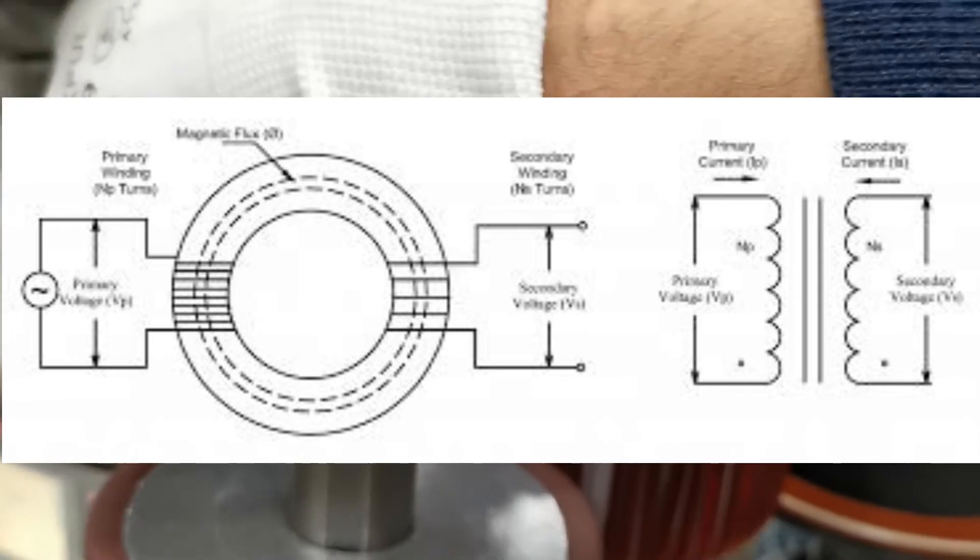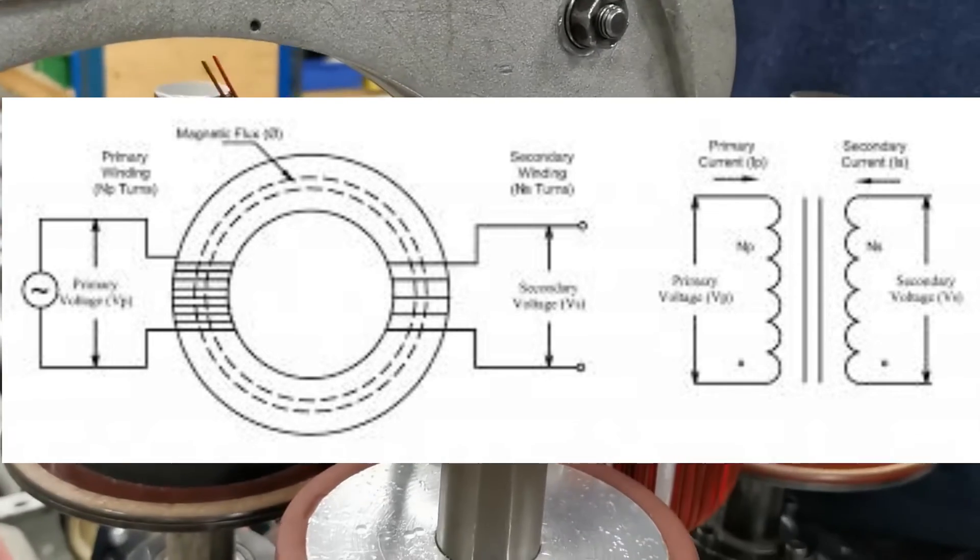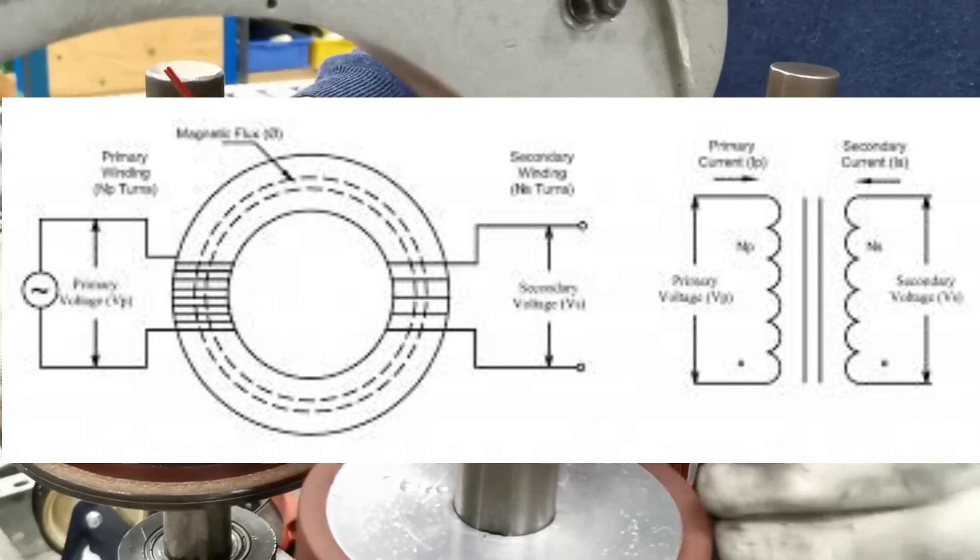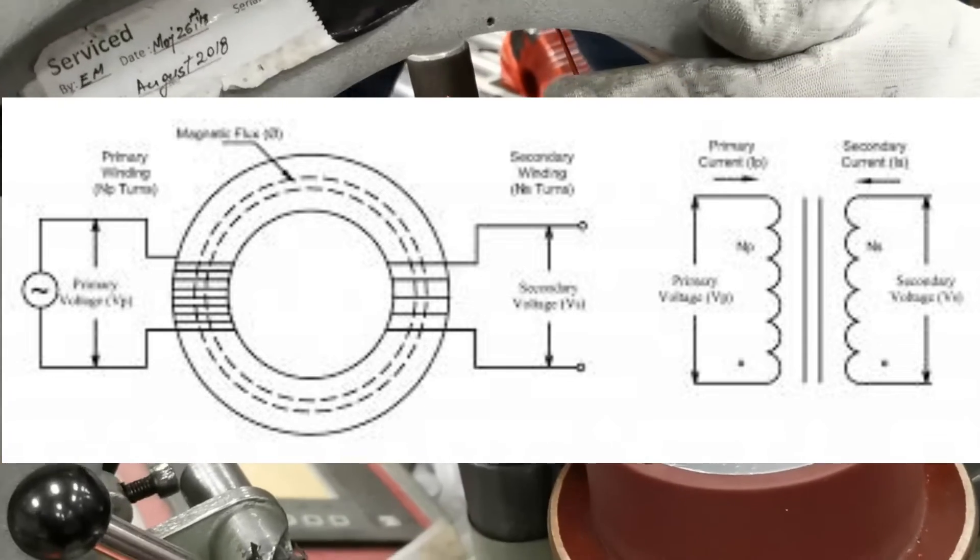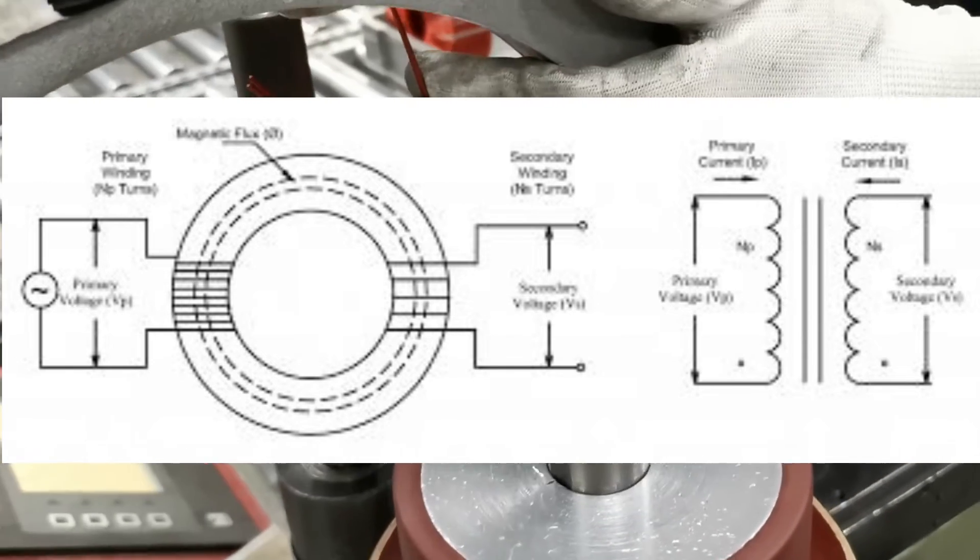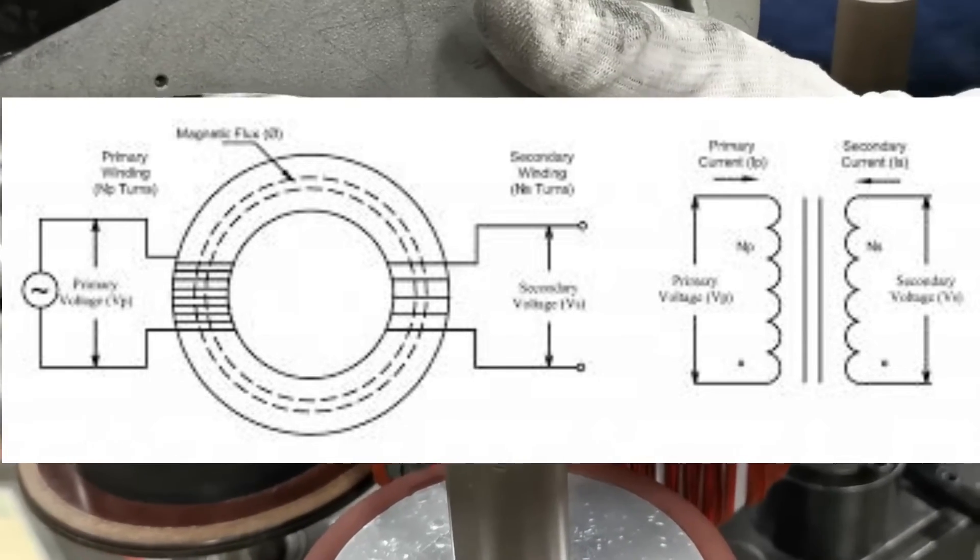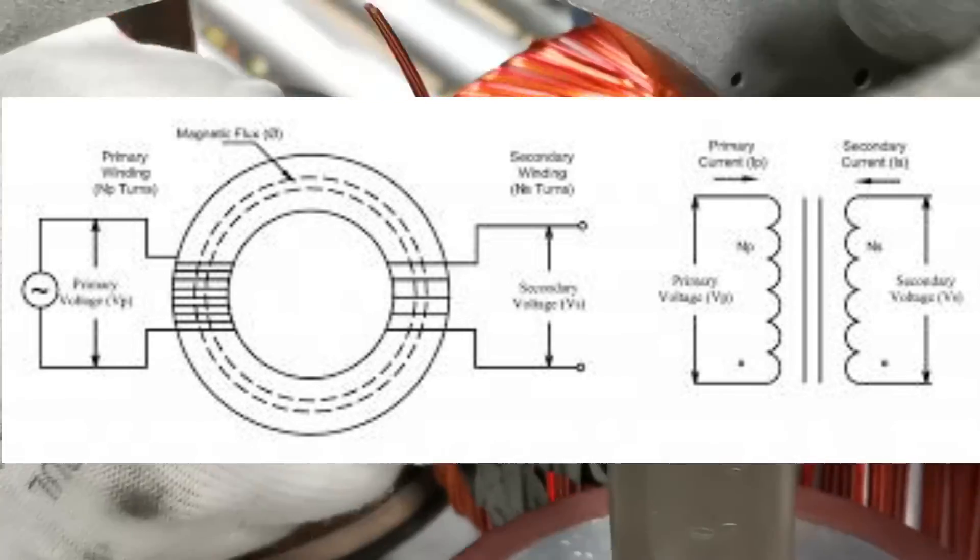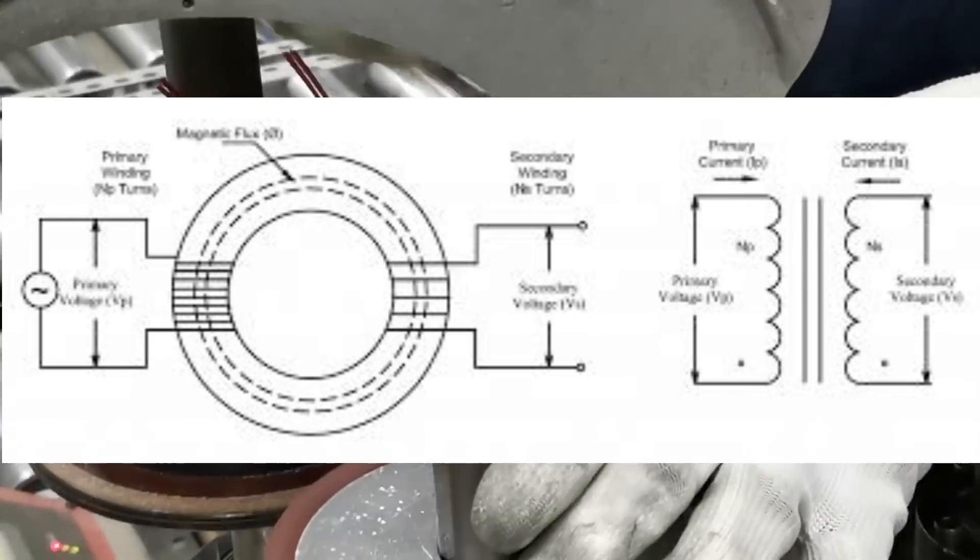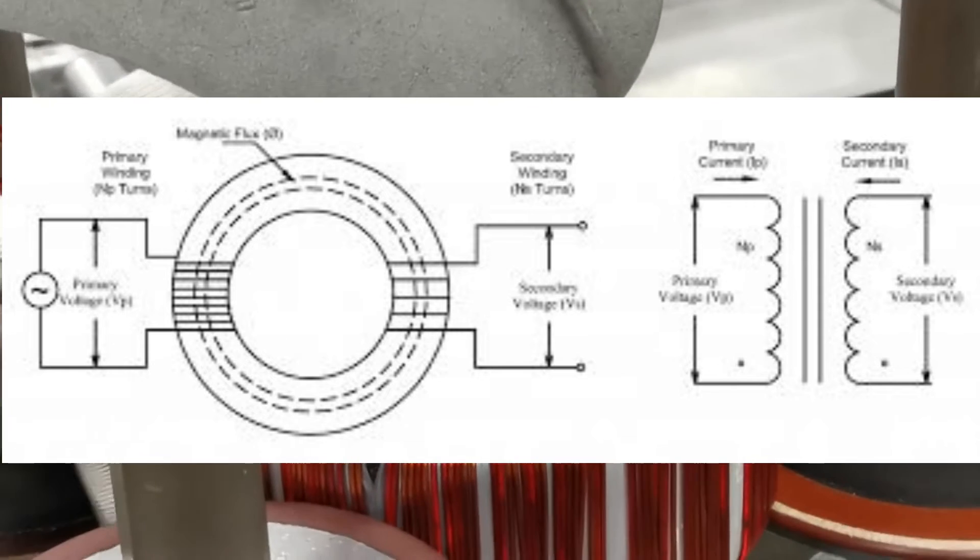The beauty of a toroidal transformer lies in its ability to transform voltage levels. The ratio of turns between the primary and secondary windings determines the transformation. If the secondary winding has fewer turns than the primary, it results in a step-down transformer, reducing the voltage.